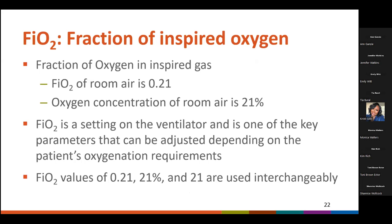FiO2 refers to the fraction of oxygen in inspired gas. When speaking about FiO2, we refer to the value as either a percentage or as a decimal. For room air, the FiO2 is 0.21 and the oxygen concentration is 21%, so 0.21 is equivalent to 21%. FiO2 is a setting on the ventilator that reflects the percent of O2 in the air that the ventilator is supplying to the patient. The value that can be set on the ventilator is typically in the range from 0.21 or 21% to 1.0 or 100%. FiO2 values may be documented as 0.21, 21%, or simply as 21, and these values are used interchangeably.